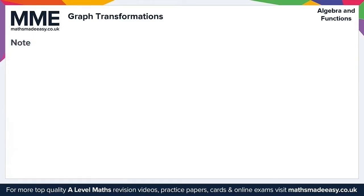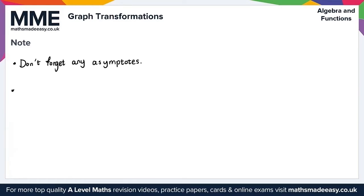A quick note on graph transformations: any asymptotes need to be moved correspondingly, so don't forget asymptotes when applying your transformations. Also note that a squash by a factor of a is equivalent to a stretch by a factor of 1 over a.